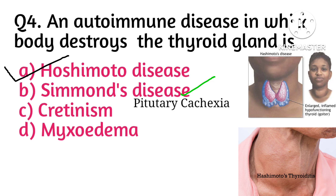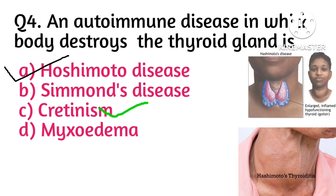Hashimoto's disease is treated with a synthetic hormone called levothyroxine. Simmonds' disease, also called pituitary cachexia, is caused due to hypopituitarism — a condition when there is a short supply of one or more pituitary hormones. Cretinism is caused due to deficiency of iodine.